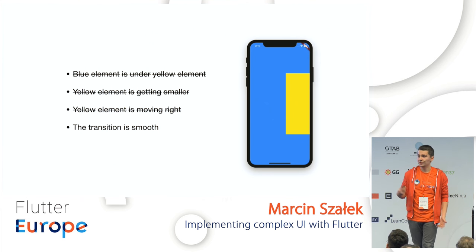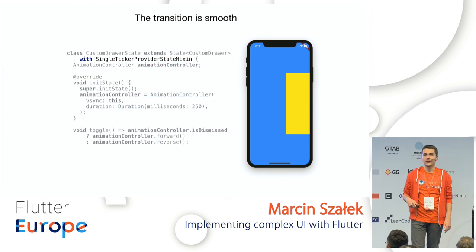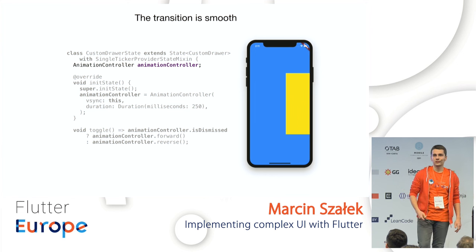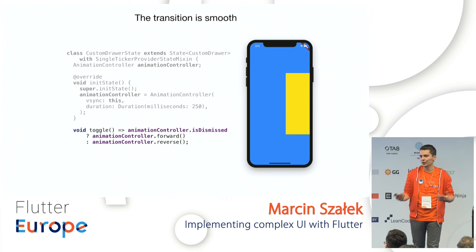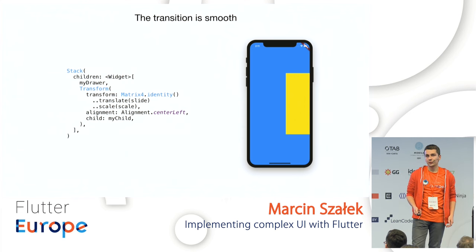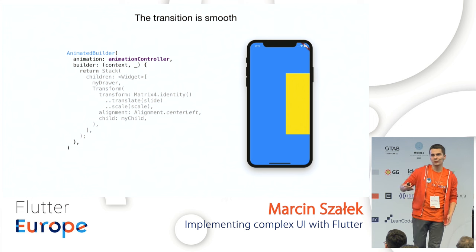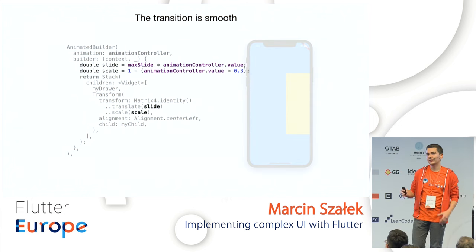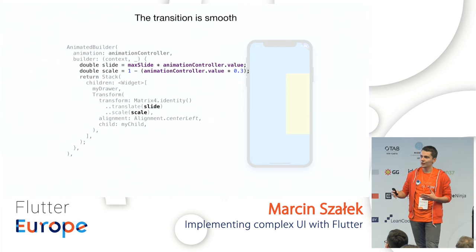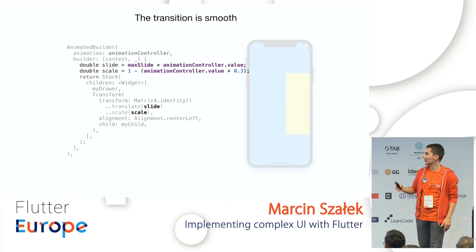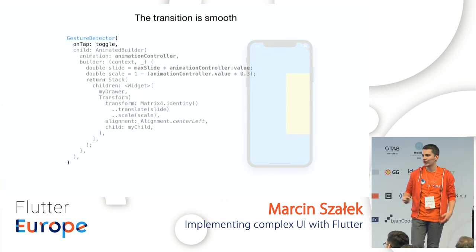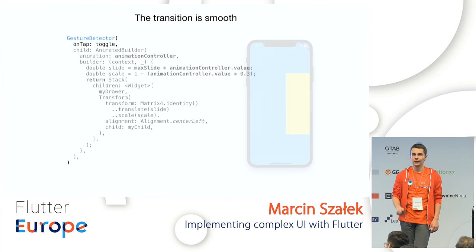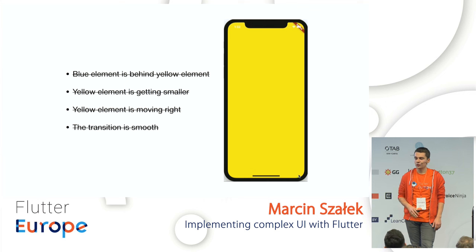To make the transition smooth, we add SingleTickerProviderStateMixin, declare and initialize an AnimationController, and provide a toggle method to open or close the drawer. In the build method, we wrap everything in AnimatedBuilder and bind the slide and scale of our widget to the animation controller's value, interpolating from starting values to the target values as the animation progresses. We wrap everything in GestureDetectors to start and finish the animation. Put together, it looks like this.